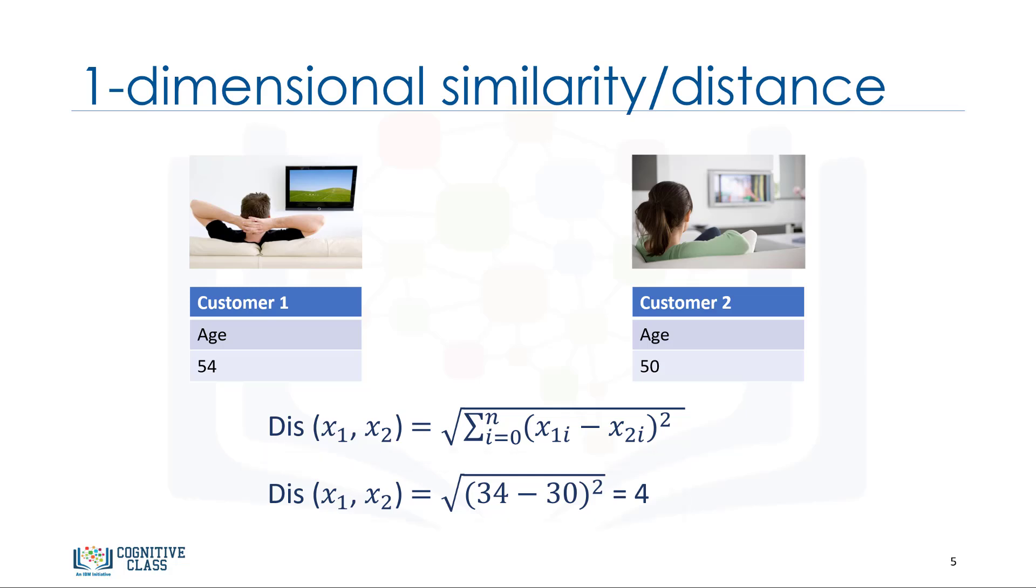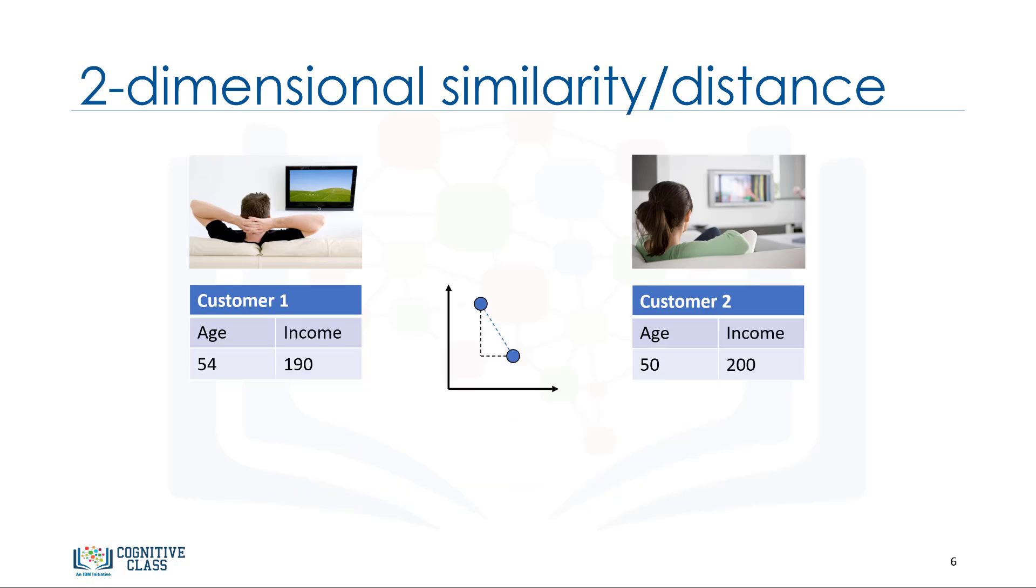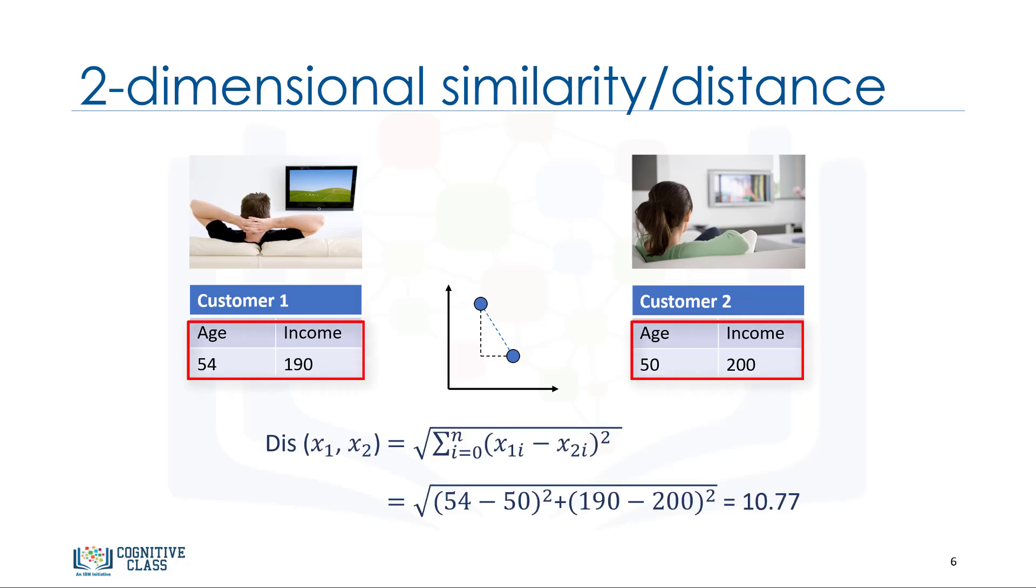What about if we have more than one feature? For example, age and income. If we have income and age for each customer, we can still use the same formula, but this time in a two-dimensional space.